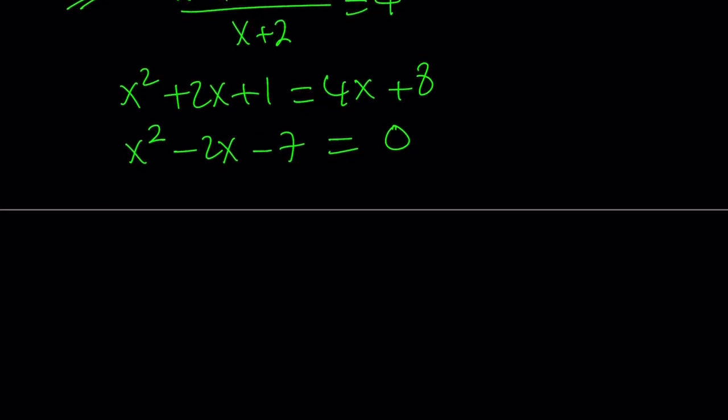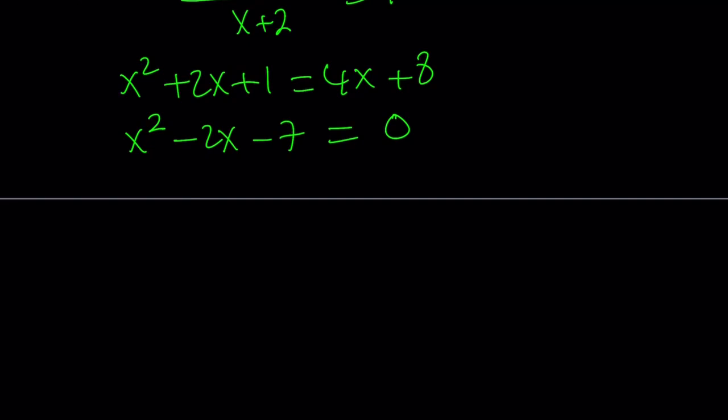What do we do? We isolate the highest power. So, from here, I'm going to isolate x², and I can write it as 2x + 7.